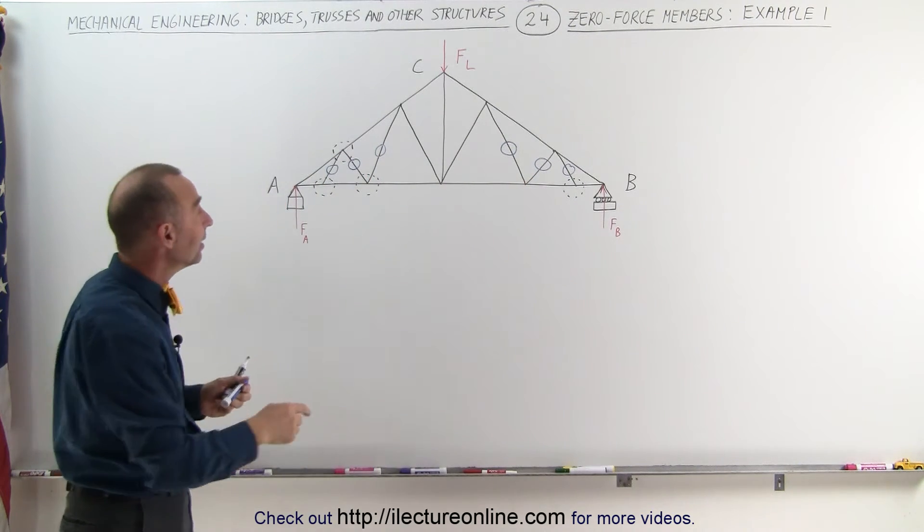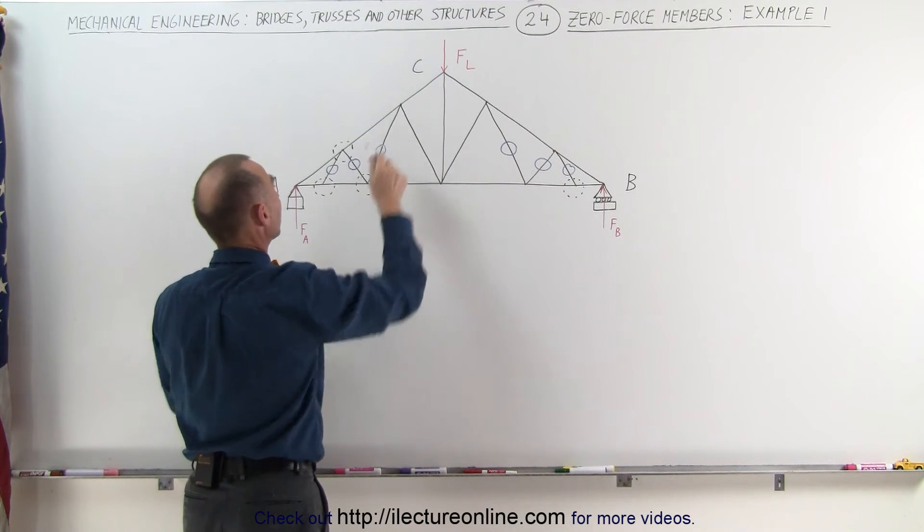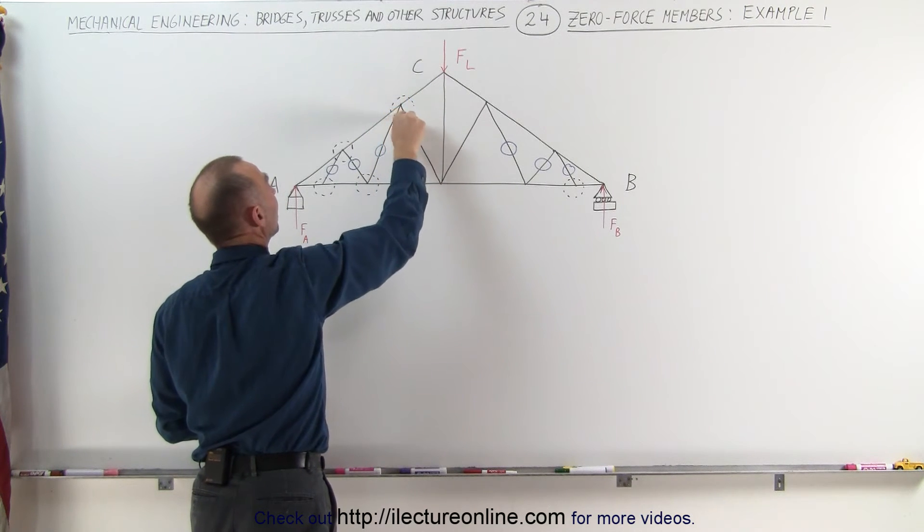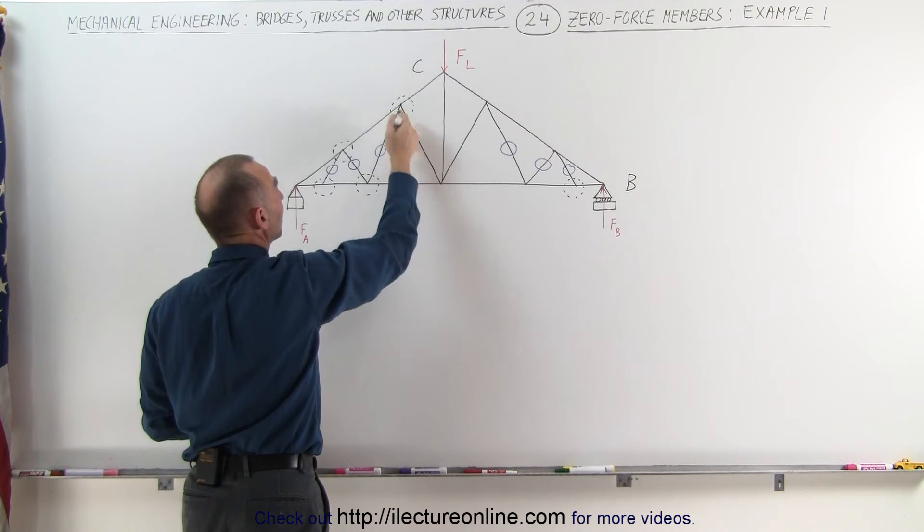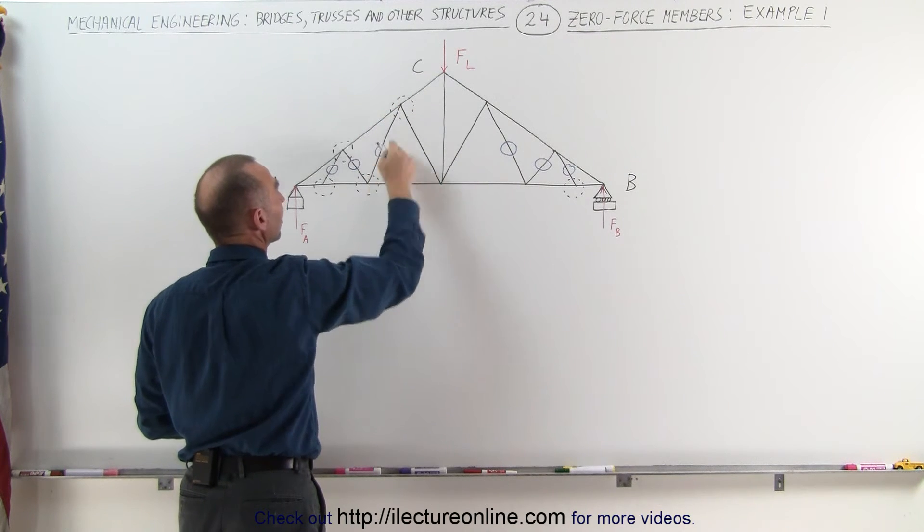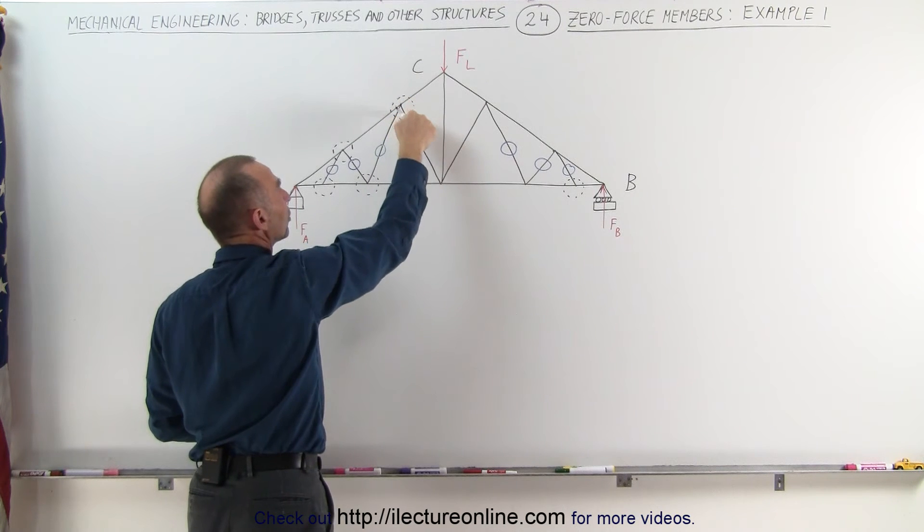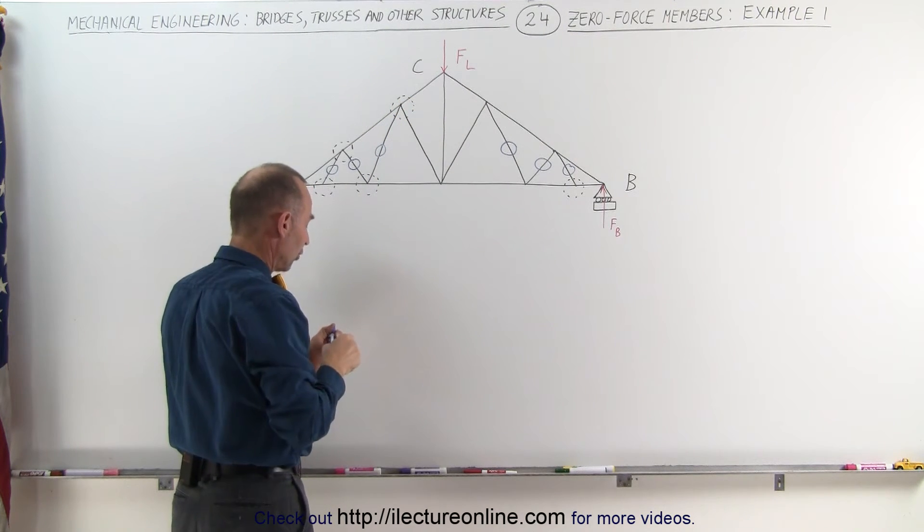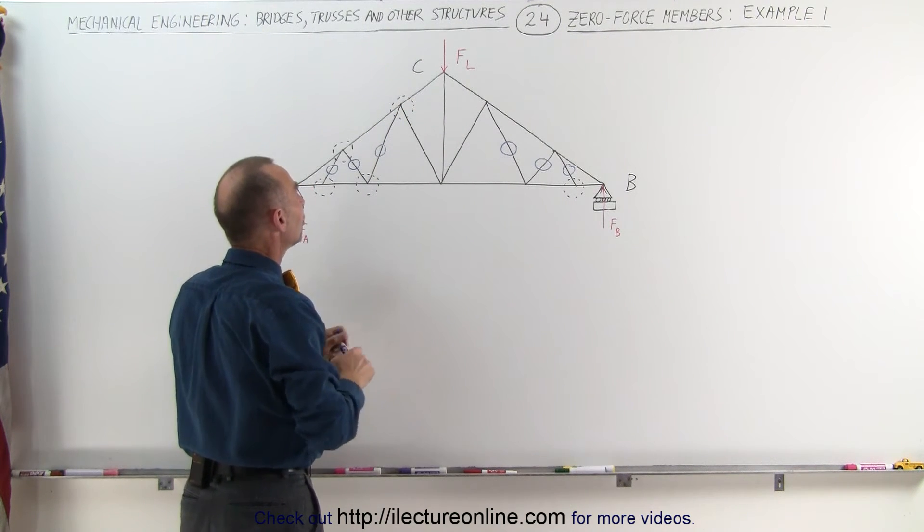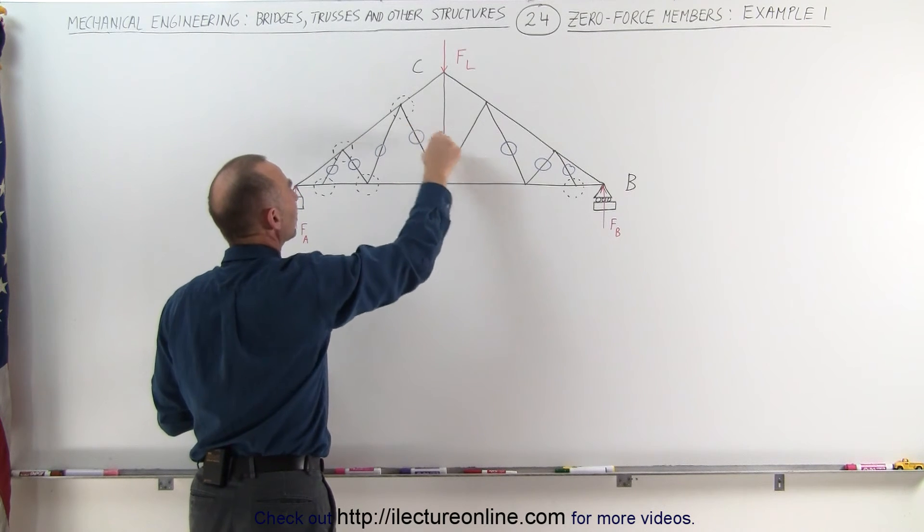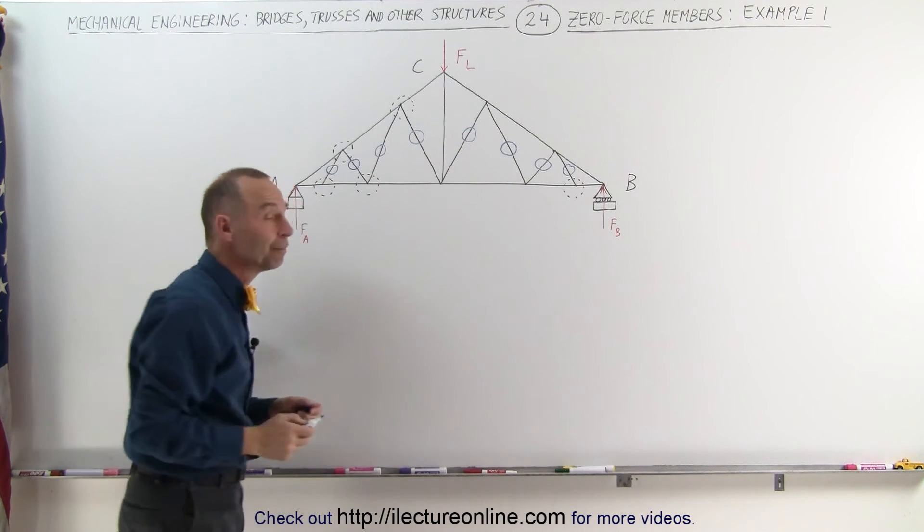And finally, again, at this position right here, at this joint, notice we can eliminate this member here because it's a zero force member, therefore we have a joint with three members, two that are collinear, the third one that is not, therefore the third one must be a zero force member. That means that this one here must be a zero force member as well.